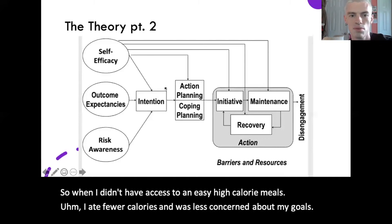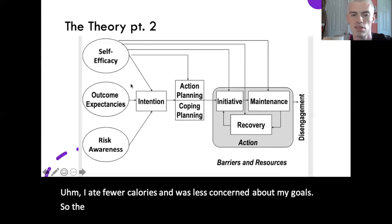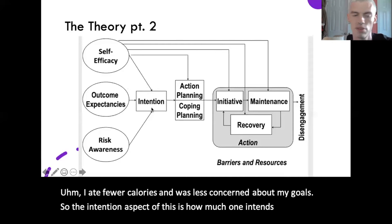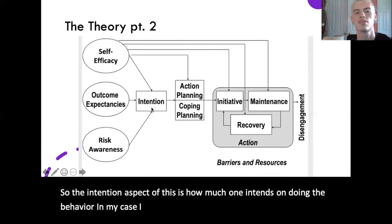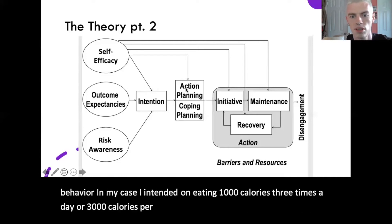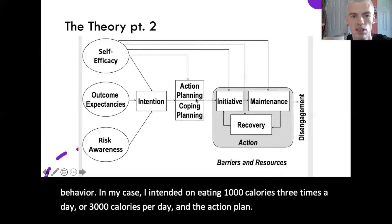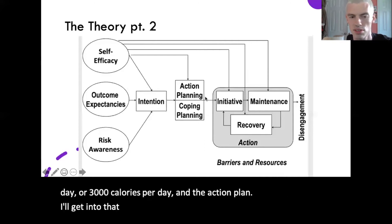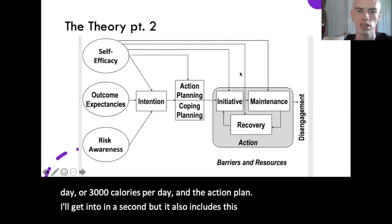The intention aspect is how much one intends on doing the behavior. In my case, I intended on eating 1000 calories three times a day, or 3000 calories per day. It also includes action planning and coping planning, which I'll get into in a second.